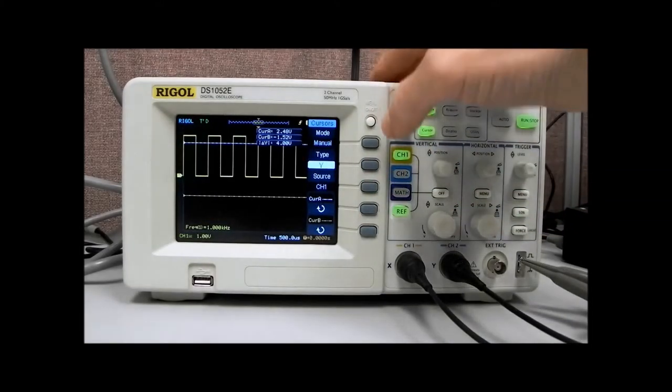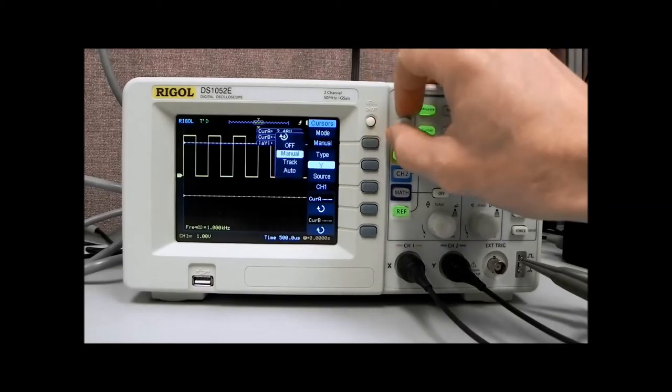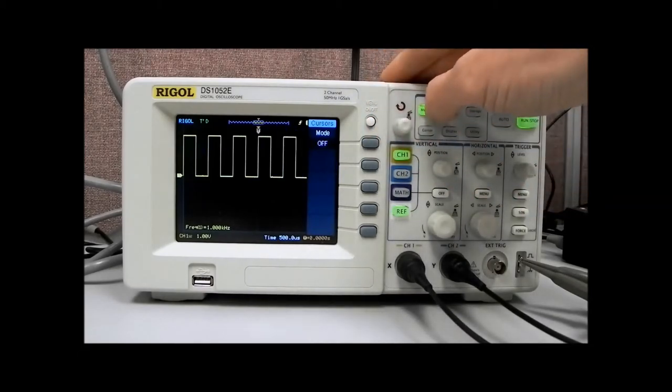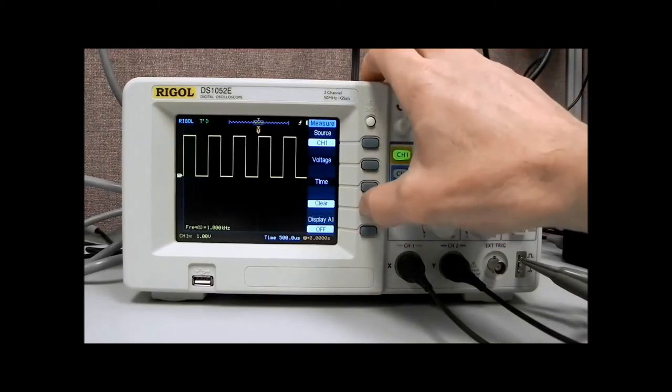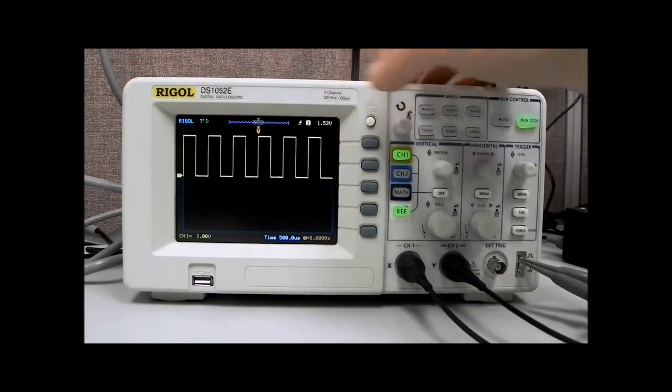Now let's take a look at the reference mode. So we're going to get rid of our measurements, we're just going to go up to cursor and all, and then let's disable our measurements as well, clear. And now we just have channel 1.